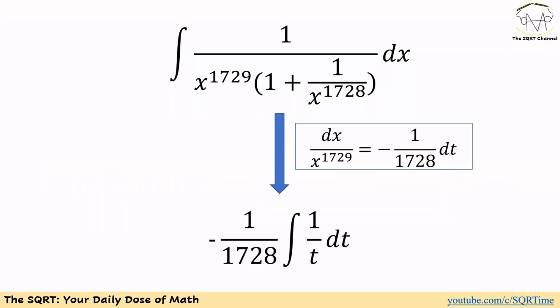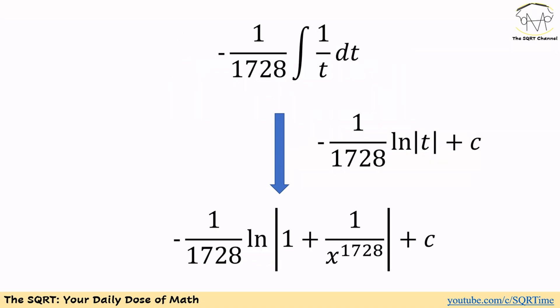Based on what we got, we can simplify the integral and write it as negative 1 over 1728 times the integral of 1 over t dt. From here everything is very simple — the final answer is negative 1 over 1728 times ln of the absolute value of (1 plus 1 over x^1728), plus a constant C. And that's our final answer.